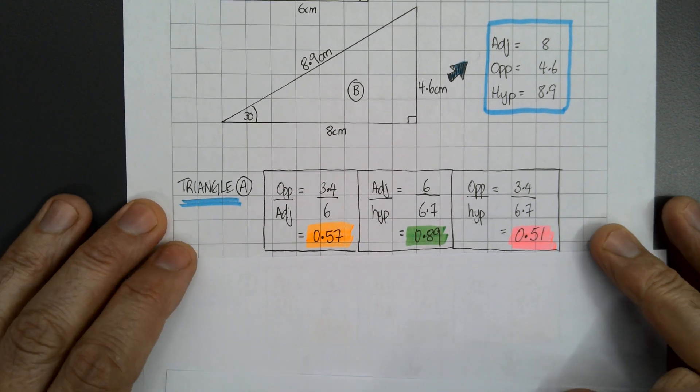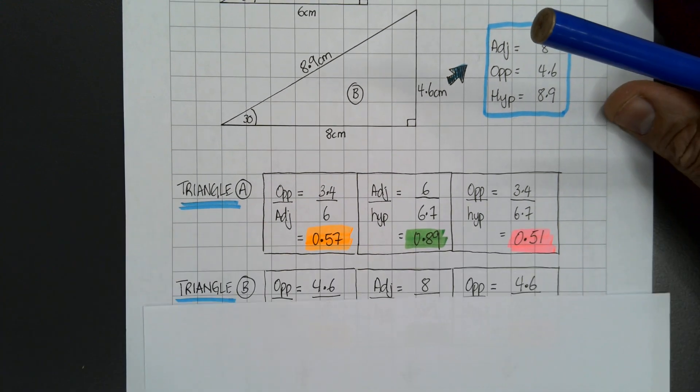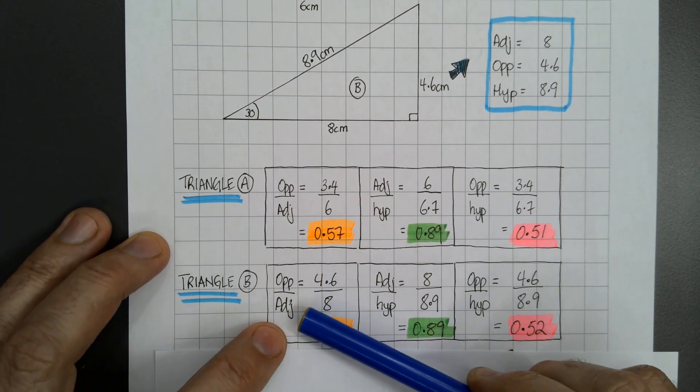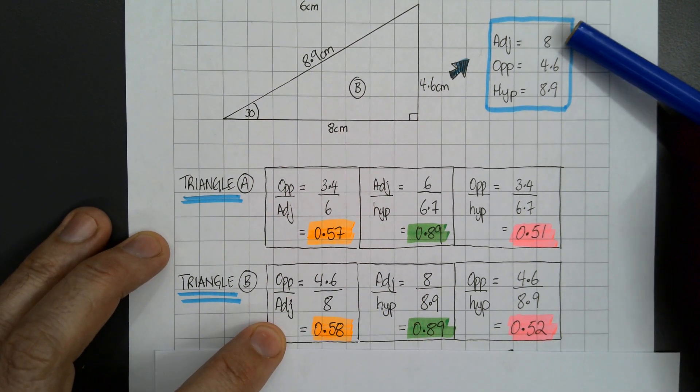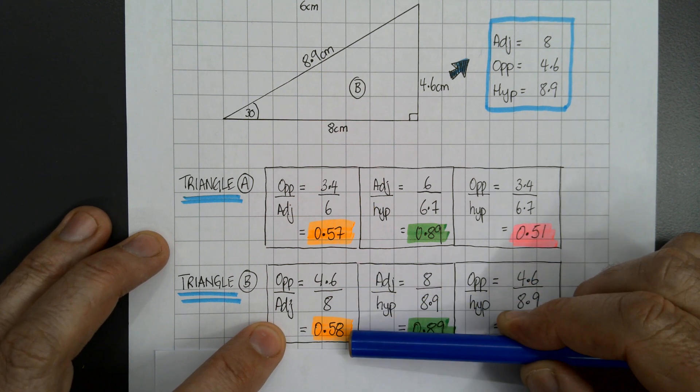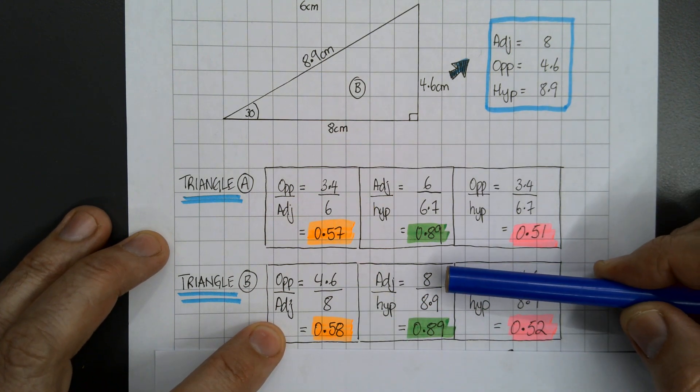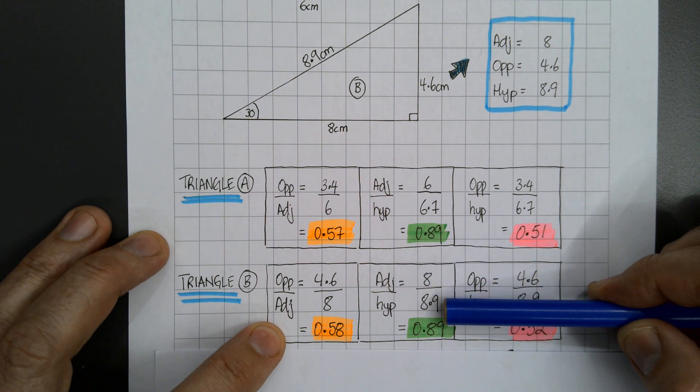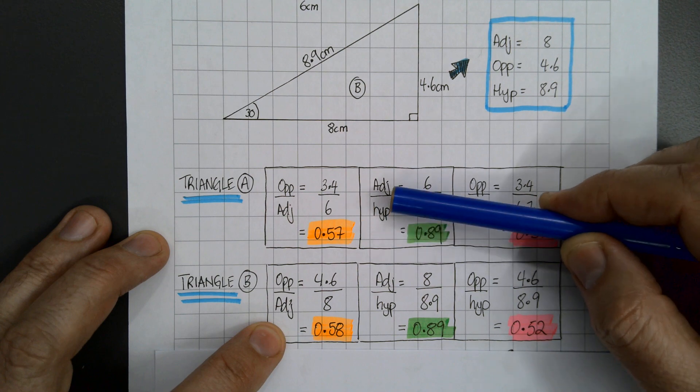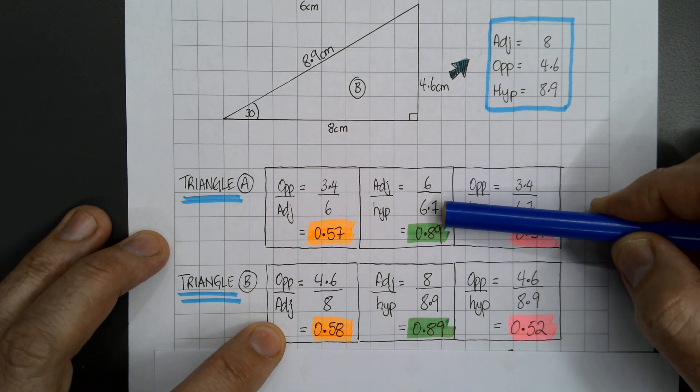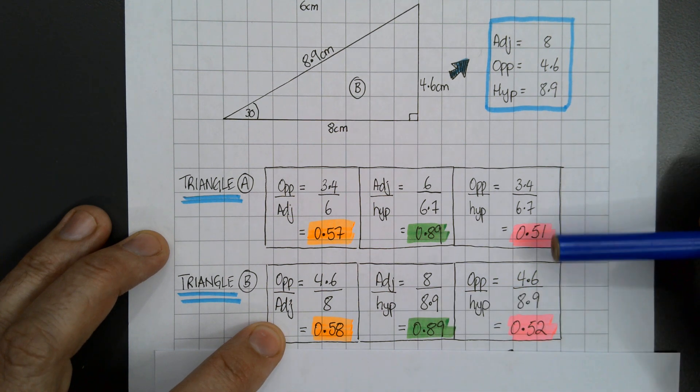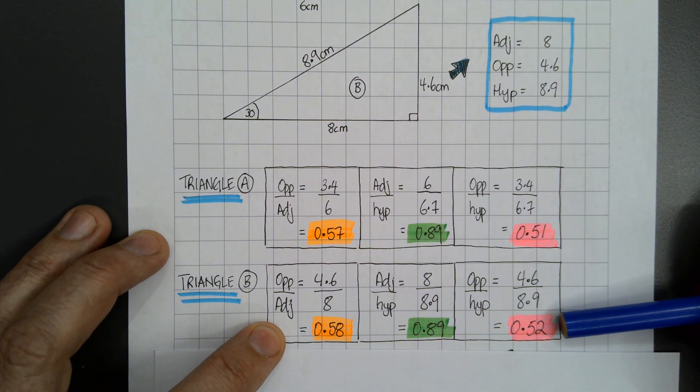Right, then if I do the same thing with triangle B - the opposite and adjacent, 4.6 over 8, divide those with the calculator and you get 0.58. If I get the adjacent over the hypotenuse, it's the same fraction, doing the same sides over each other, only there's different sizes because they're different sized triangles. Then I get 0.89 and 0.52.